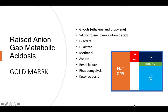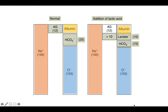The mnemonic GOLD MARK stands for: G — glycols (ethylene glycol and propylene glycol); O — oxoproline or pyroglutamic acid; L — L-type lactates; D — D-type lactates; M — methanol; A — aspirin; R — renal failure; R — rhabdomyolysis; K — ketoacidosis. These are the common causes of raised anion gap metabolic acidosis.